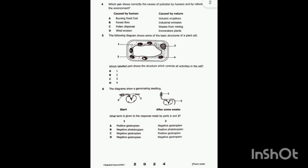So the answer for question number six is C: one — negative geotropism, and two — positive geotropism.